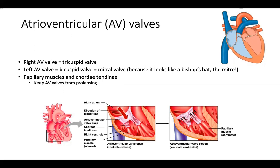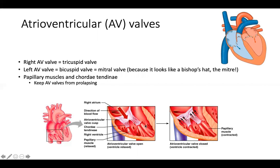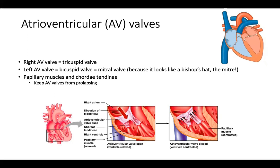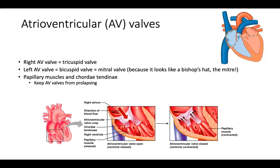There are additional structures that help prevent the valves from prolapsing: the papillary muscles and the chordae tendineae. The papillary muscles are upward finger-like projections attaching to the chordae tendineae — fibrous tendinous cords. These structures work together to prevent the leaflets from prolapsing back into the preceding chamber. When the ventricle contracts and pressure builds, the papillary muscles contract and the chordae tendineae keep the valve leaflets taut, preventing them from flying back up into the atria.